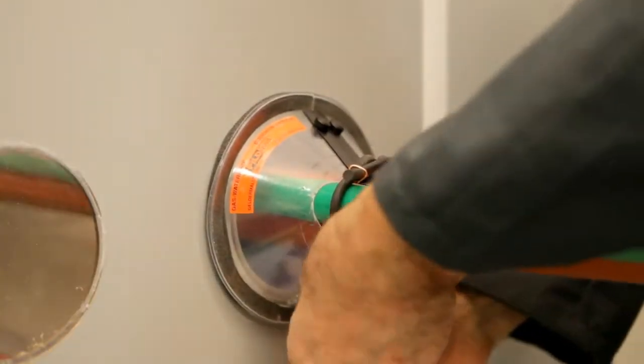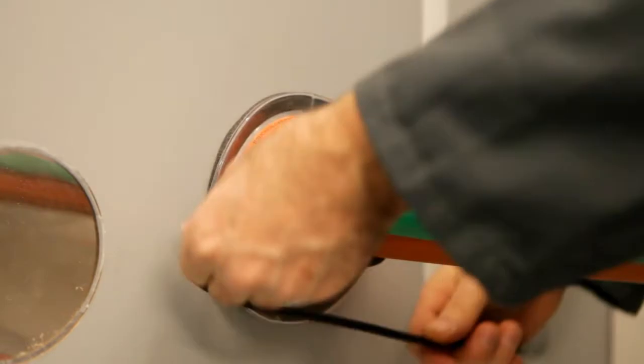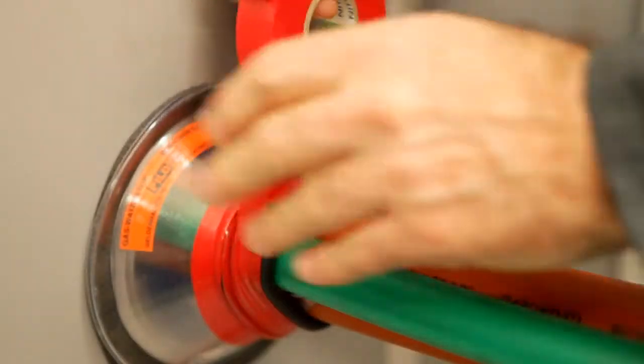Wrap the cord around the cable so that the cone is pressed tightly against the wall. Secure the cord with the tape.